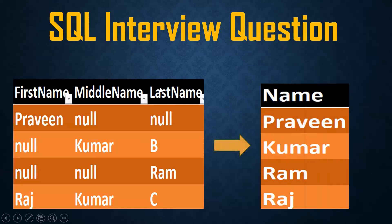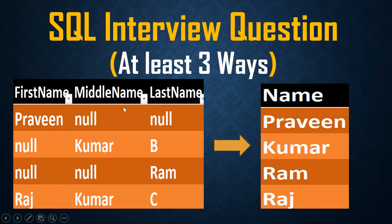I want to get the output as Praveen Kumar Ram Raj. So I want to get the first not-null values. This is my input — I want to get the first not-null values: Praveen, Sukumar, Ram, Raj. At least three ways I should get this.